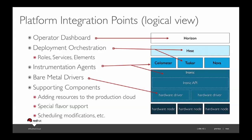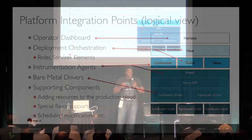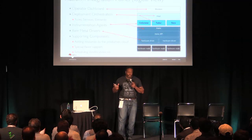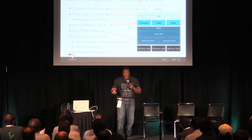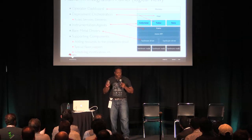For the dashboard, it's Horizon — if you can create a Django application, you can show visually whatever value-add you want to roll up for the operator. Deployment orchestration is based on Heat. Within Tuscar, which talks to Heat, there is this concept of roles, services, and elements. A role would be a compute node or block storage node; within a compute node, a service could be Nova API, the metadata service; and you can build elements further. The deployment orchestration lets you take these as Lego blocks and put together roles that translate to a Heat template.